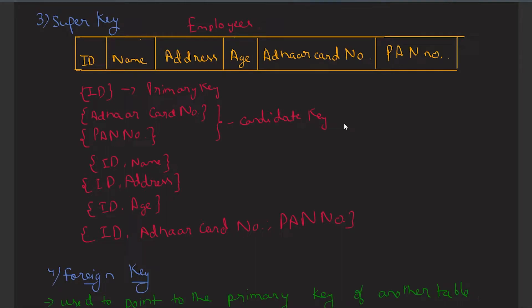Hello everyone. In the previous video we discussed about the super key and the foreign key, and till now we have discussed about 4 keys: super key, foreign key, candidate key, and the primary key. Now we are going to learn about alternate keys.